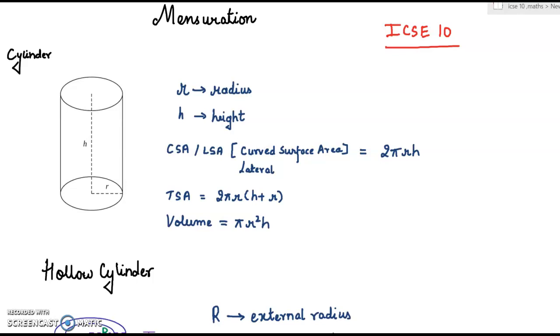If we have to calculate CSA or LSA, now CSA and LSA both are same. CSA means curved surface area, LSA means lateral surface area. So the formula here is 2πrh. Now pi shall be mentioned in your question paper or if it is not mentioned then you can put pi equal to 22 by 7, and it is also mentioned 3.14.